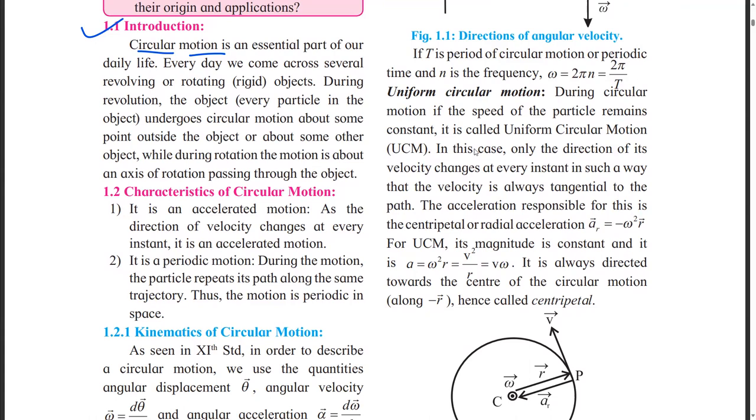So what is the characteristic of circular motion? Already we have seen it is having accelerated motion and periodic motion. What is the difference? With accelerated, the velocity changes at every instant, but in periodic, the particle repeats its path after a certain interval. Correct.